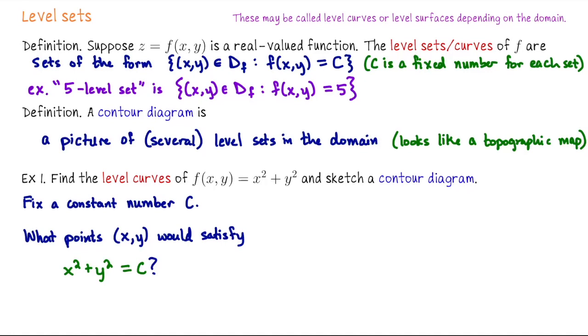So my first remark is if c is negative, no points would satisfy this. If c is zero, the origin would satisfy this. So the origin would be the zero level set. And then for positive values of c we would be looking at the circle of radius square root of c.